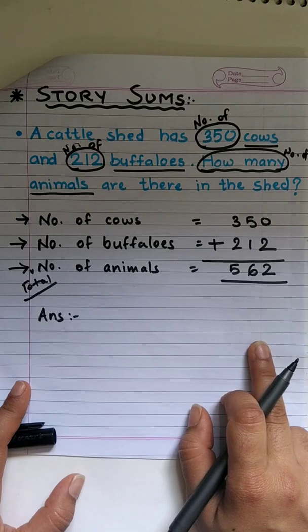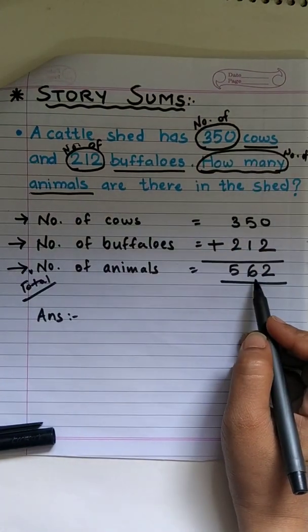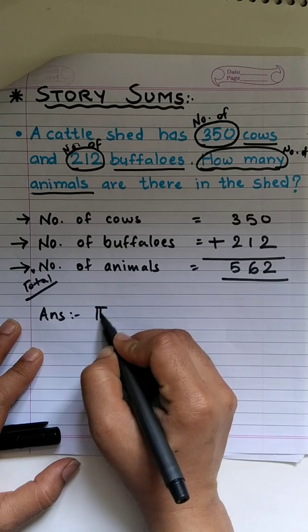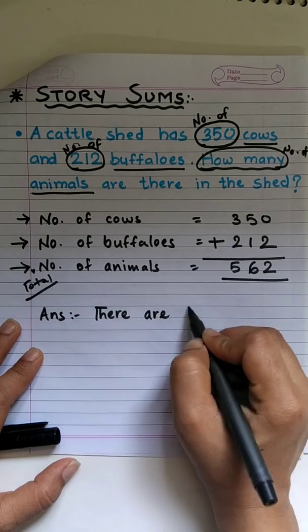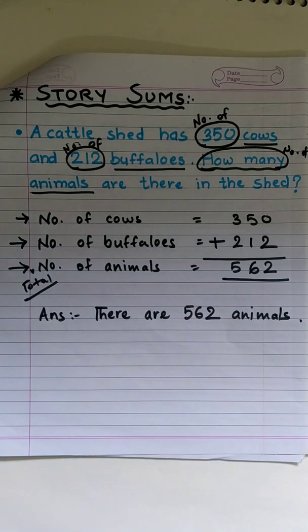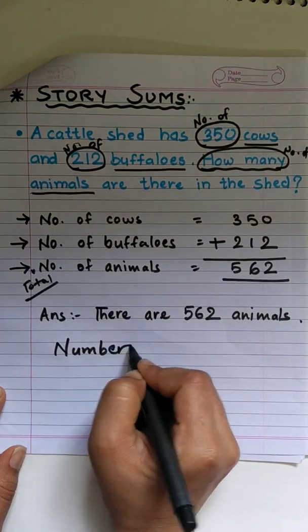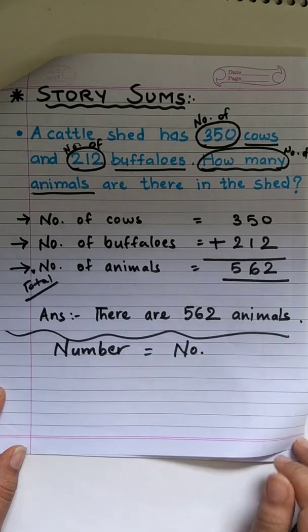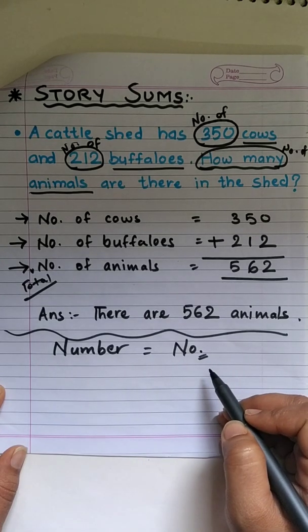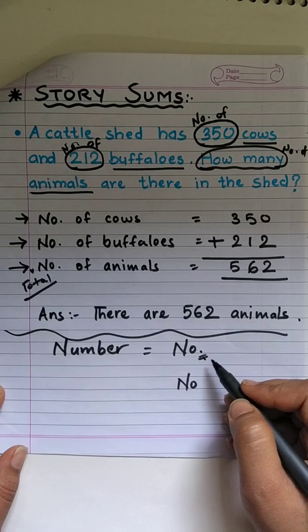We also have to write a statement of answer. Ok? This is important in problem sums or we call it story sums. So, again instead of how many we will write 562. So, how many animals are there in the shed? So, there are 562 animals. Quite easy, right? Point to be noted, instead of writing the complete spelling of number we have just written N O dot which is abbreviation for number that we use. One more thing, if you don't put dot over here it becomes no, ok, which does not make any sense over here, so we need to put the dot. It is very important.